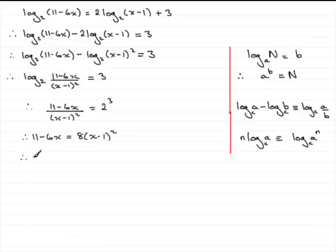Next, all I need to do is to multiply out this bracket. x minus 1 times another x minus 1, take care here, gives x squared minus 2x plus 1. Now I'm going to expand the bracket. We have 11 minus 6x equals 8x squared minus 16x plus 8.